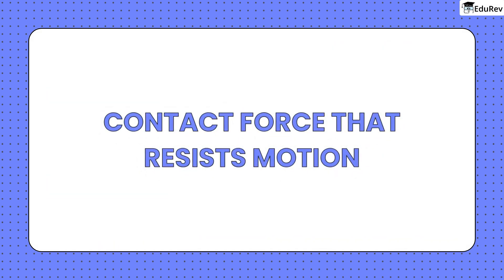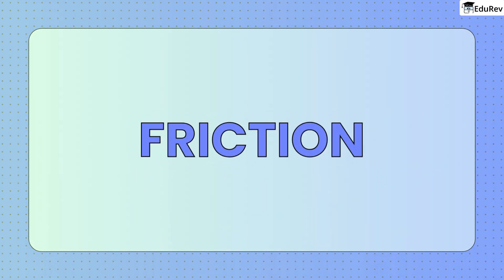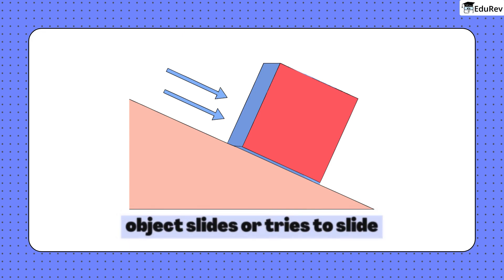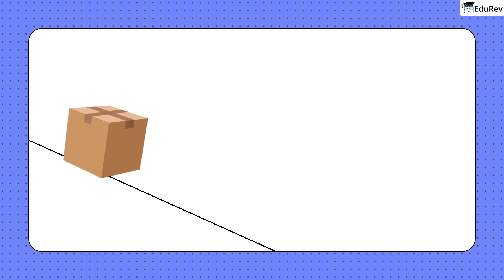But there's another contact force that resists motion. That is friction. Friction is the contact force that opposes motion when one surface moves or tries to move over another. When an object slides or tries to slide over a surface, friction opposes the motion.